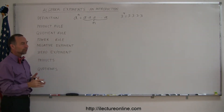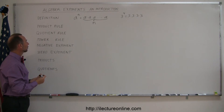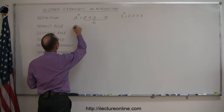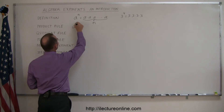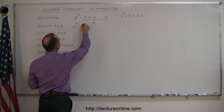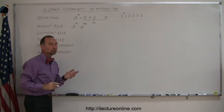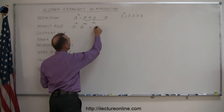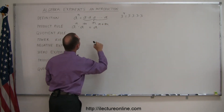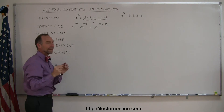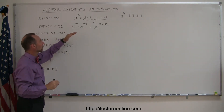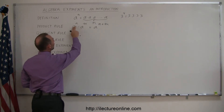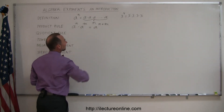We have all kinds of rules that we have to be able to apply. The first rule is the product rule. If we have a to the n power times a to the m power, where n and m are two different exponents, this is equal to a to the n plus m power. When the bases are the same — the number a is called the base, and n and m are called the exponents — we simply add the exponents.